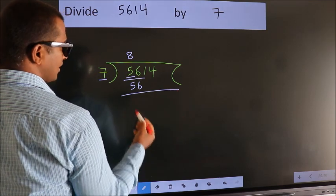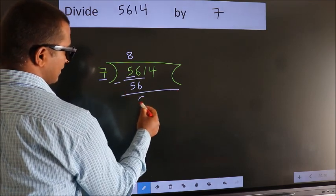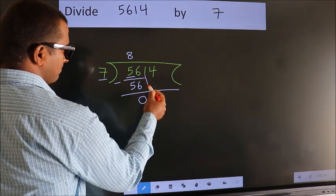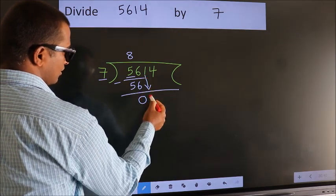Now we should subtract. We get 0. After this, bring down the beside number. So, 1 down.